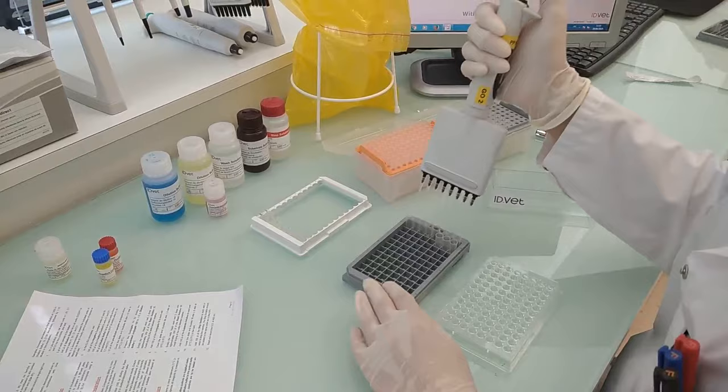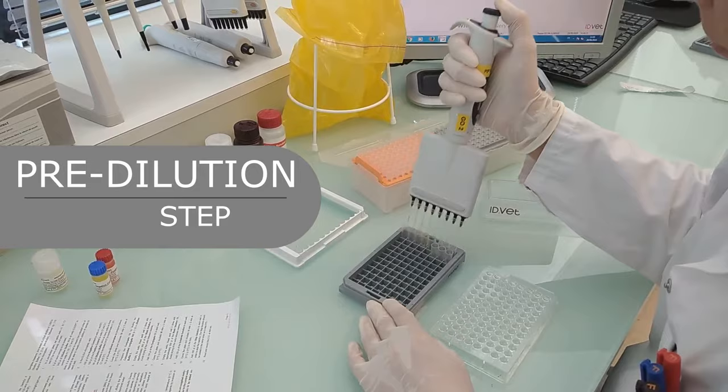Predilution step: In a predilution plate, add 5 microliters of each sample to be tested. Set aside wells A1, B1, C1, and D1 for the positive and negative controls, and E1 for an optional internal reference material.